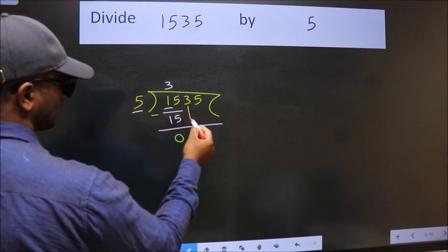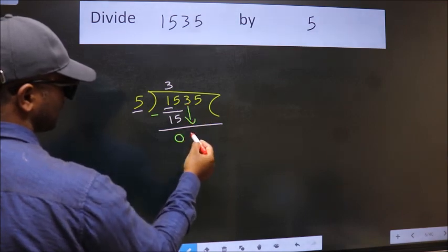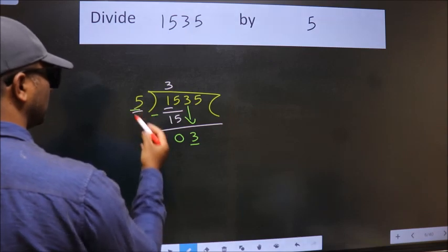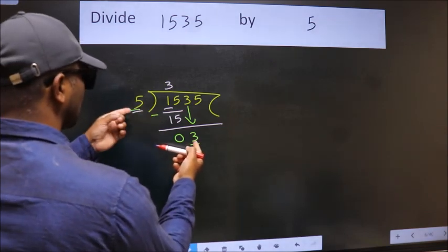After this, bring down the beside number. So 3 down. Now here we have 3. Here 5. 3 is smaller than 5.